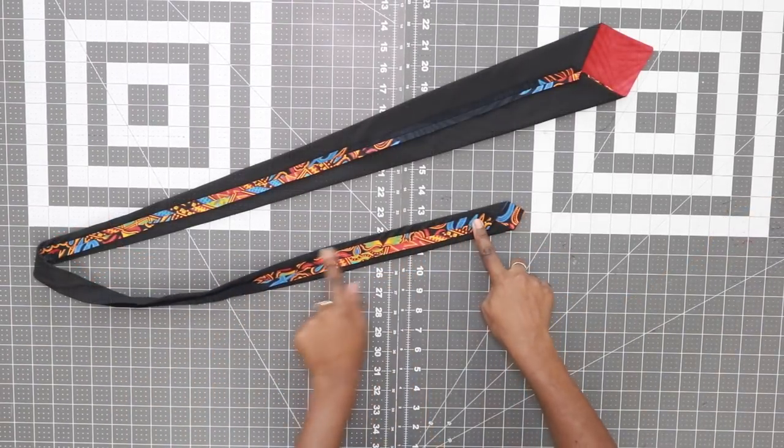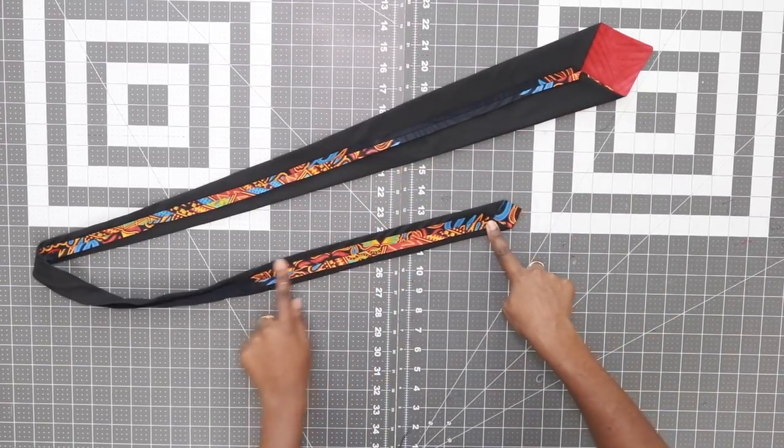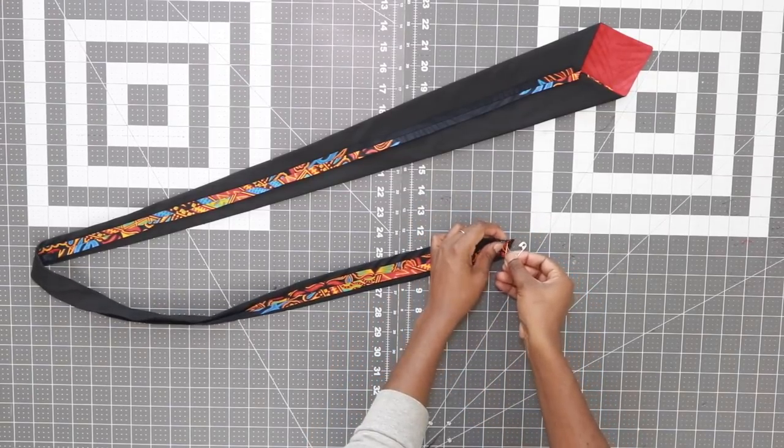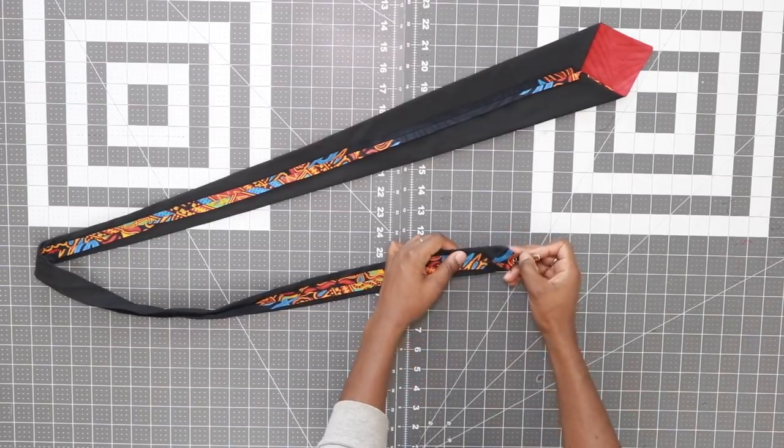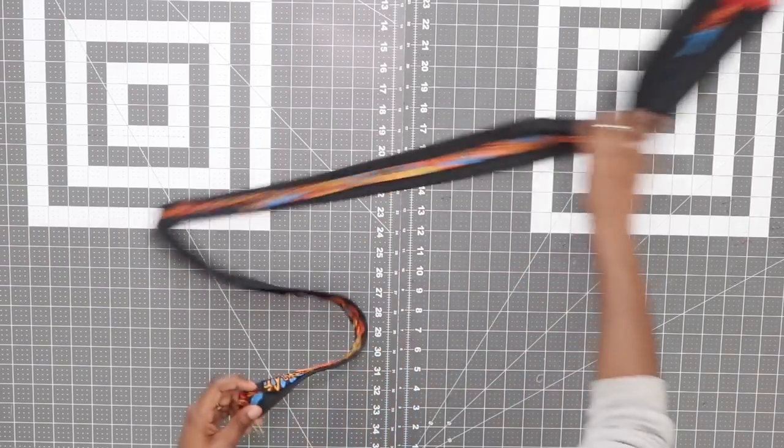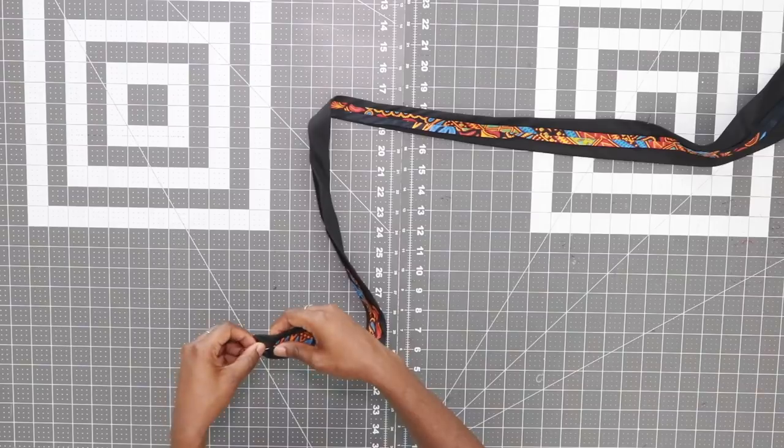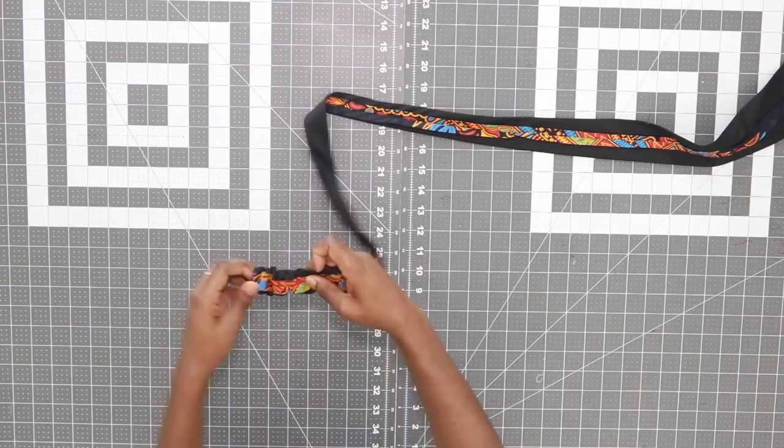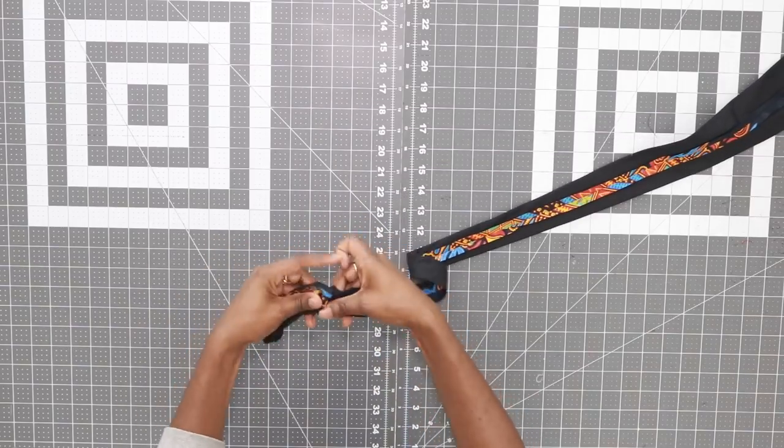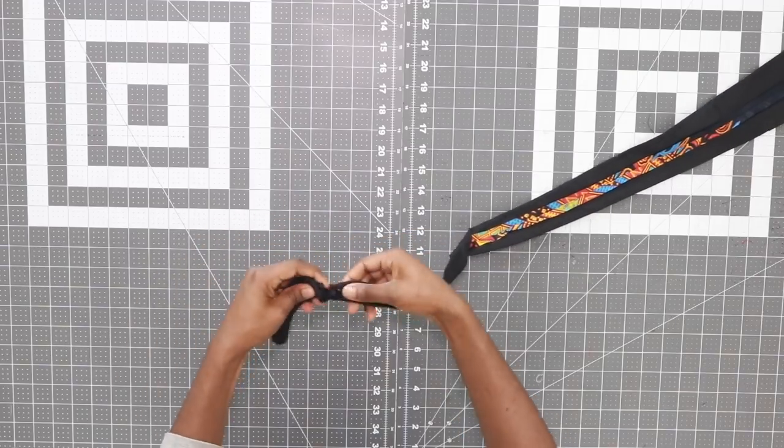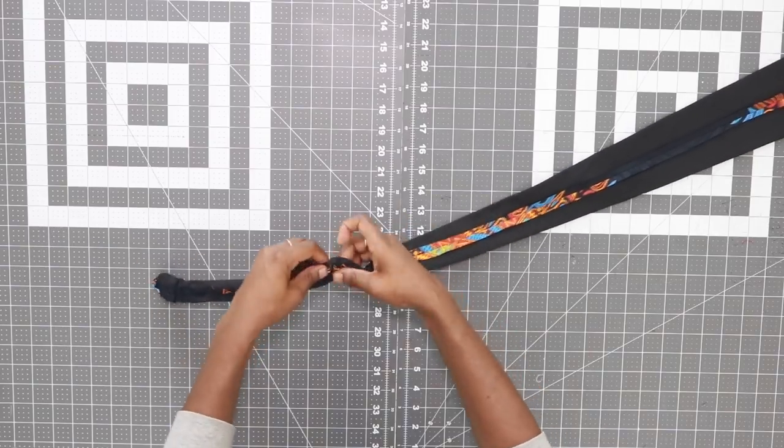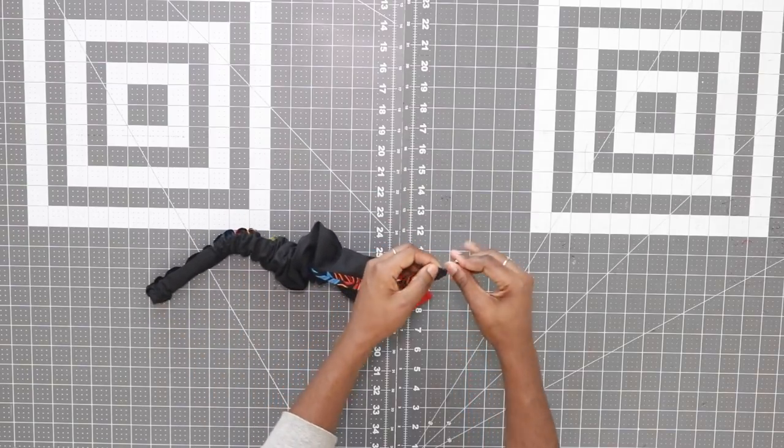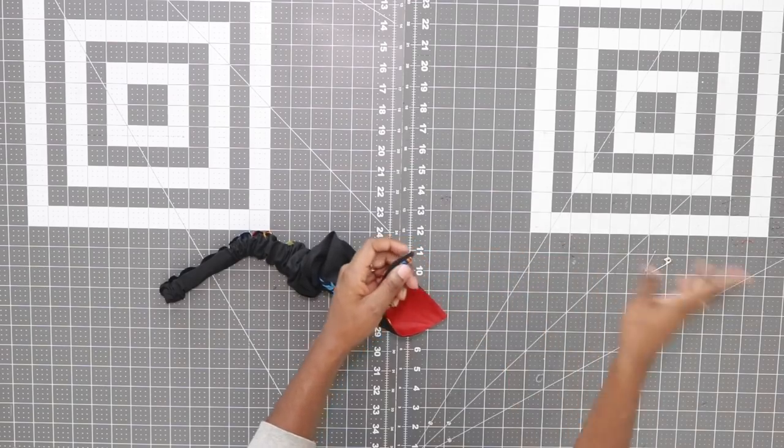After pressing the seam open, it should be nice and centered. Next you can take a safety pin and pin it to the small end. And then what you want to do is begin feeding it through.